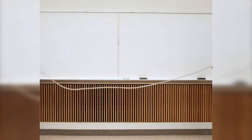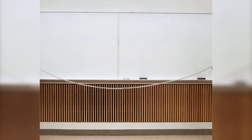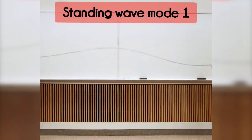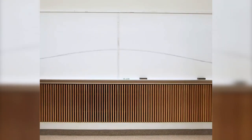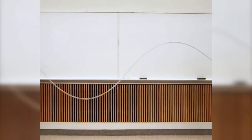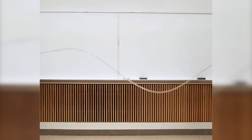Now observe this demonstration. A slinky is attached at one side and shaken from the other — you can see the peak value traveling toward the fixed end, which is an example of a traveling wave. For the standing wave demonstration: in mode 1, only one cycle moves up and down with the peak oscillating in place; in mode 2, two cycles are visible and they also oscillate at the same place. This is how you can understand the standing wave pattern.